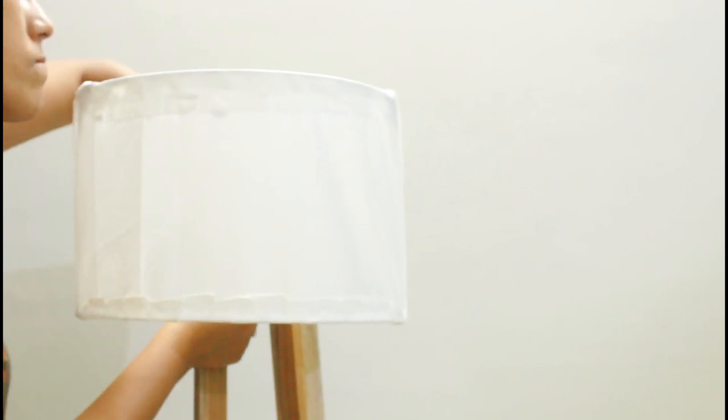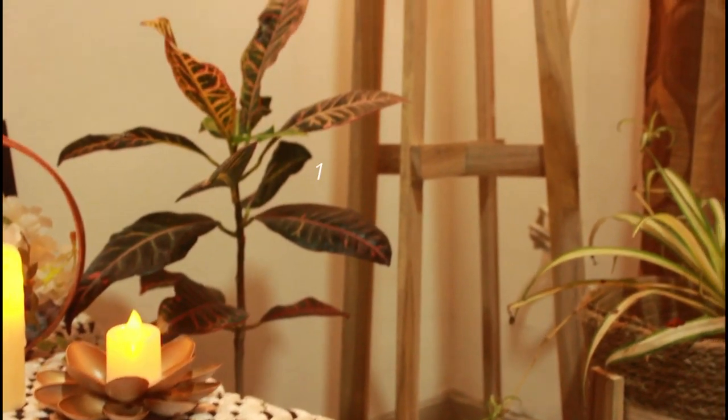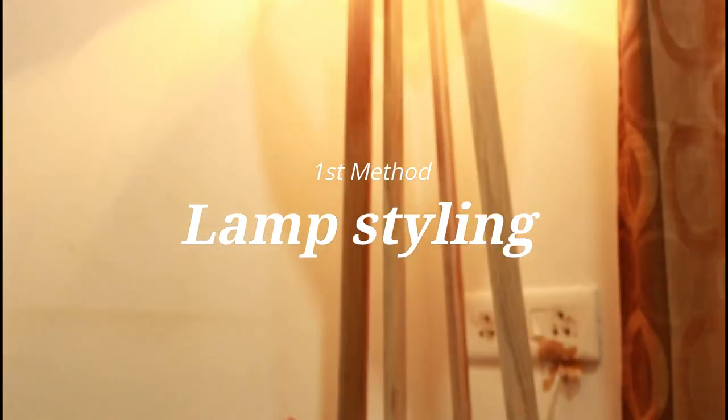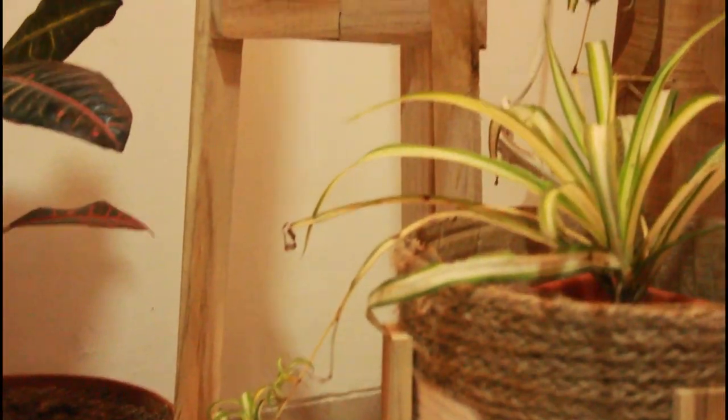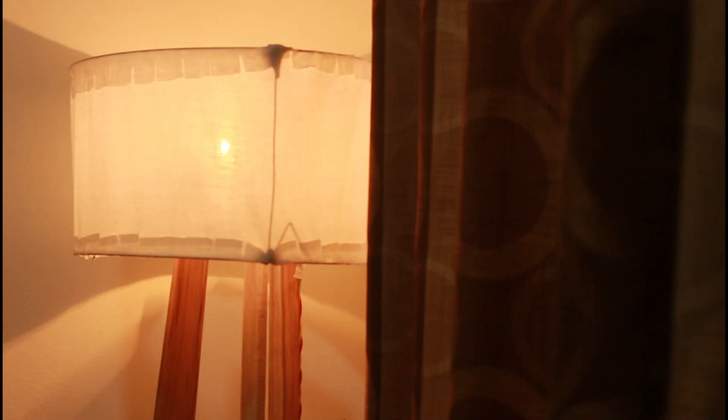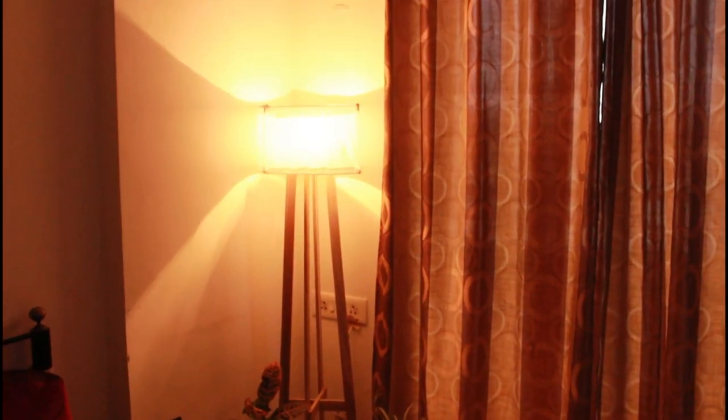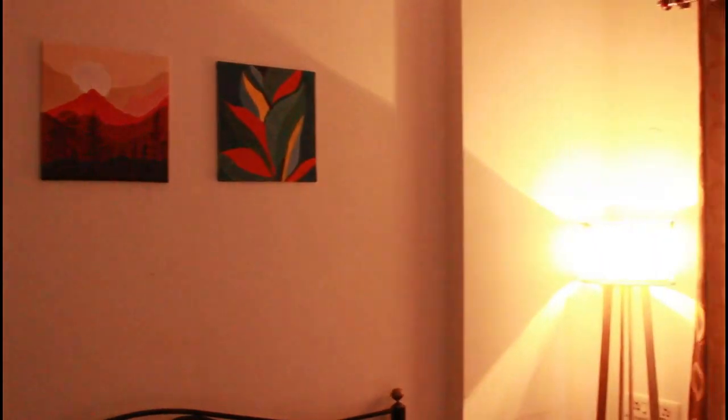Now we will style it with two methods. The first method, I used it in the living room corner. I put the lamp there and put two planters below on one side.